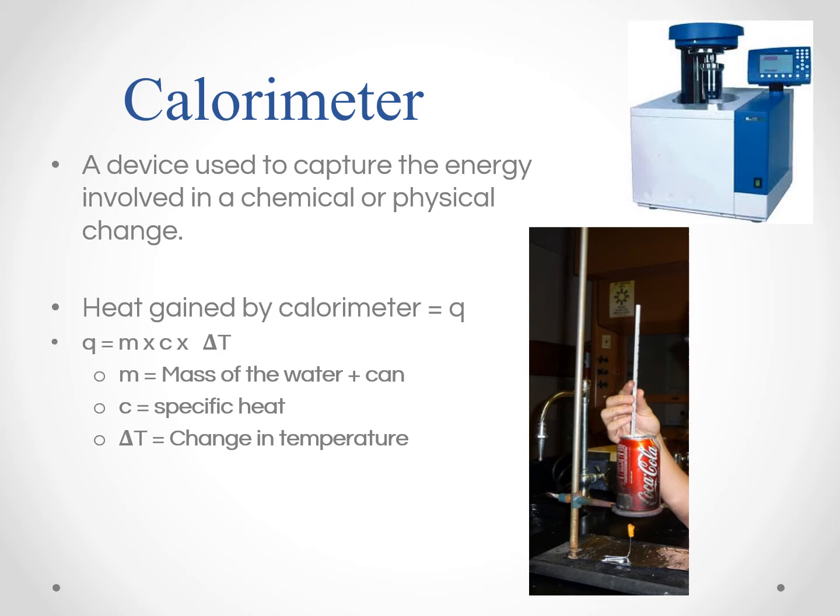So the basic idea behind a calorimeter is that you can figure out the heat gained by the calorimeter through this equation here, which is m times c times delta T. So m is the mass of the water plus the can, c is the specific heat, and delta T is the change in temperature.